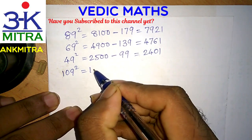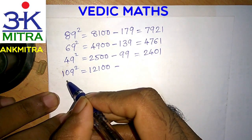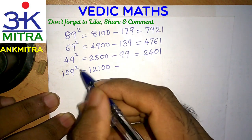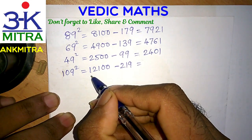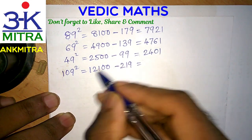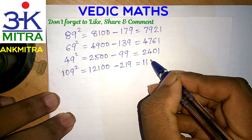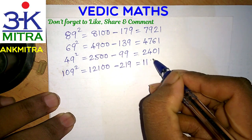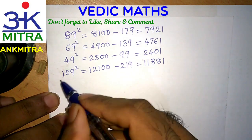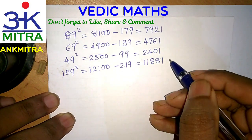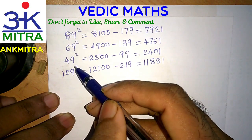The square of 110 is 12100. Then subtract the sum of 110 and 109, which is 219, from 12100. We get 11881. So 11881 is the perfect square of 109. I suggest you try out different numbers which are one short of a perfect round number.